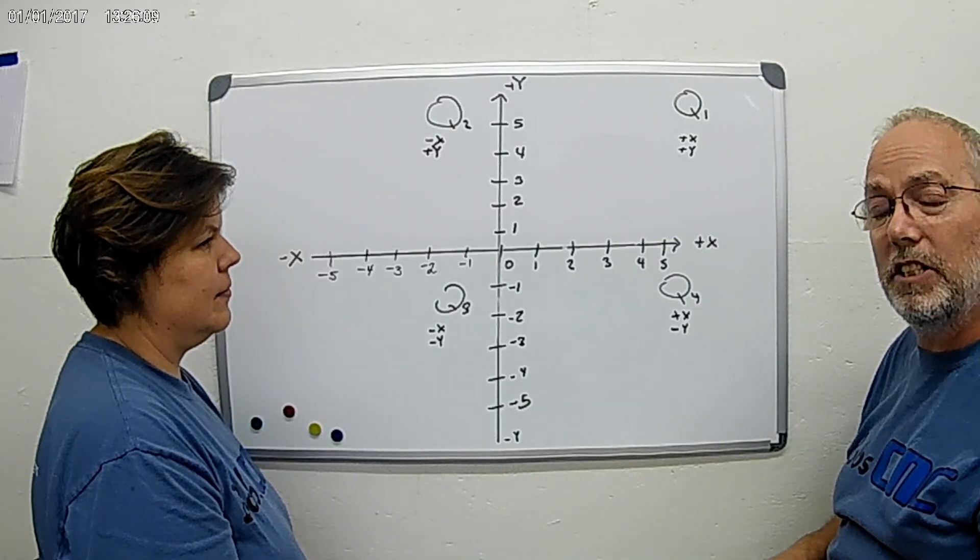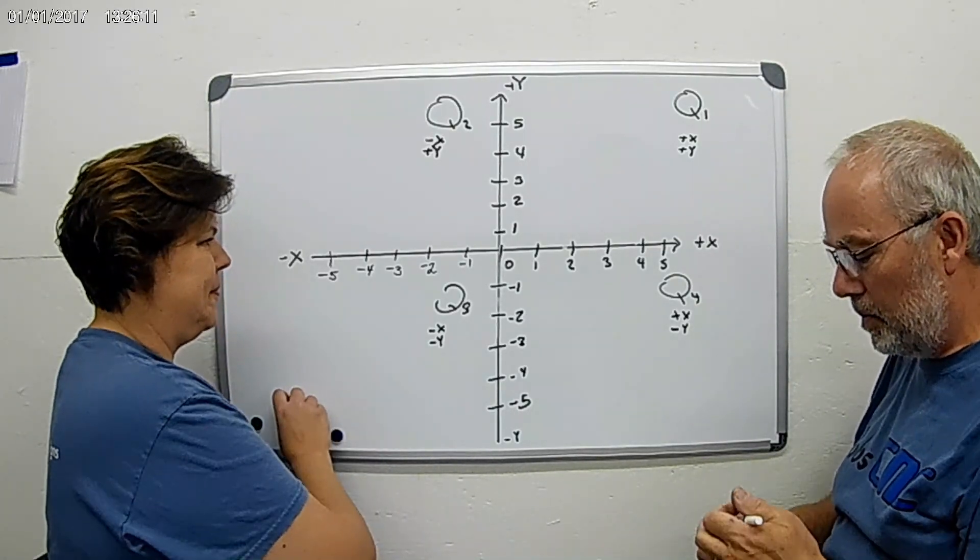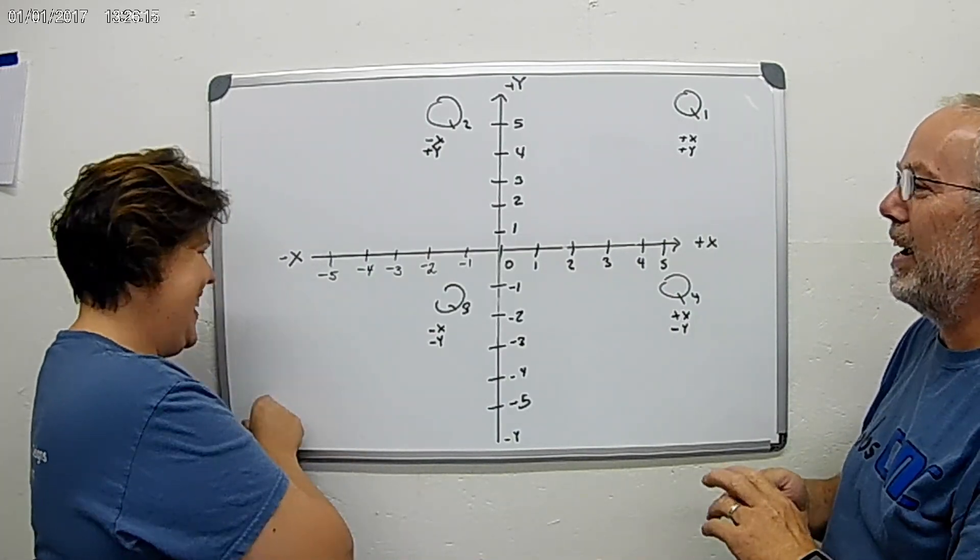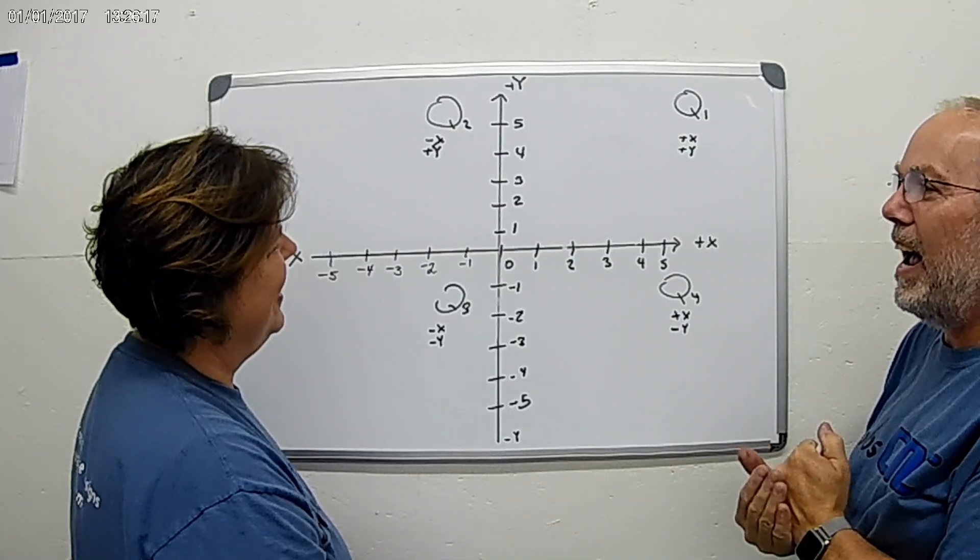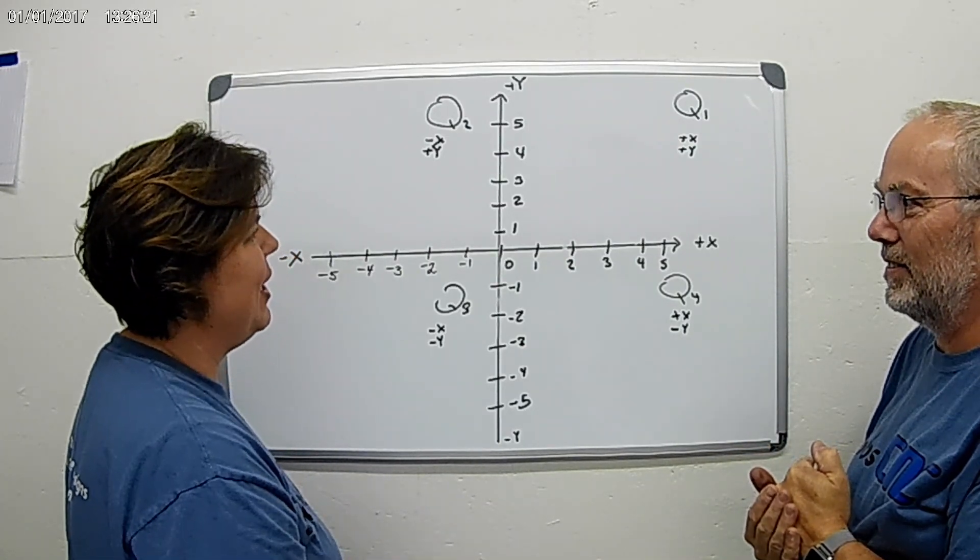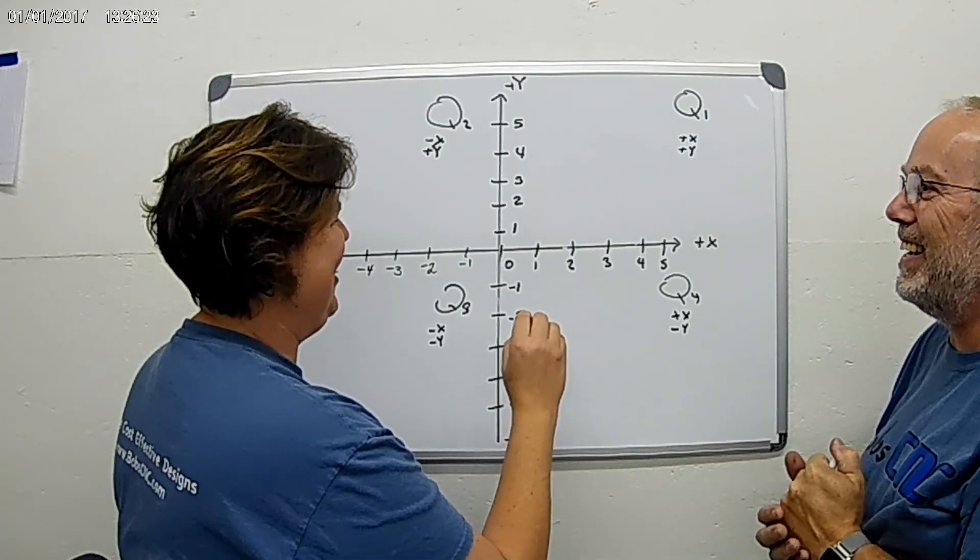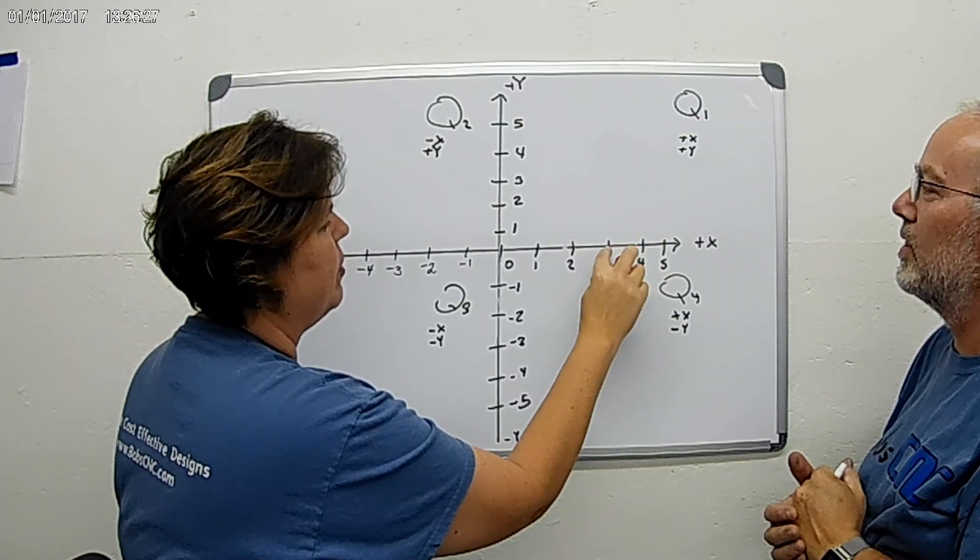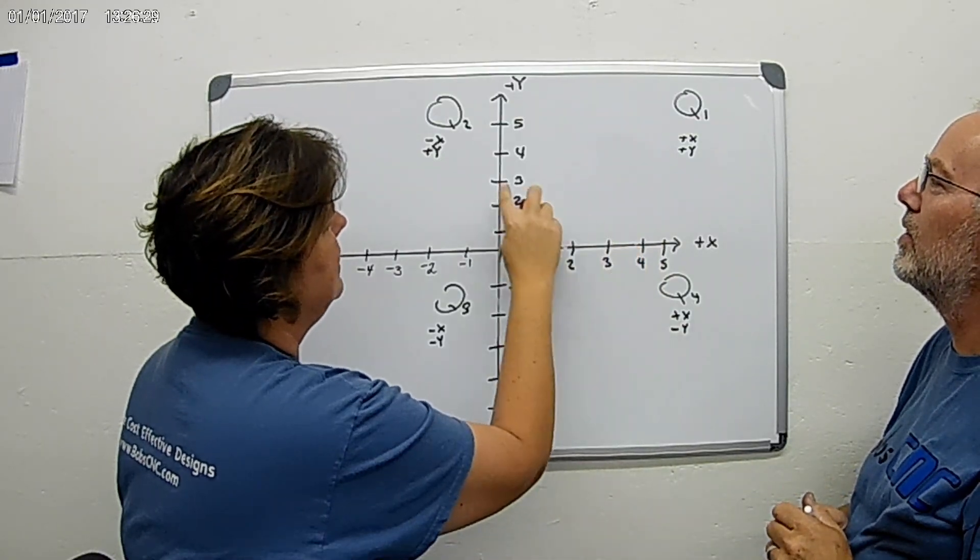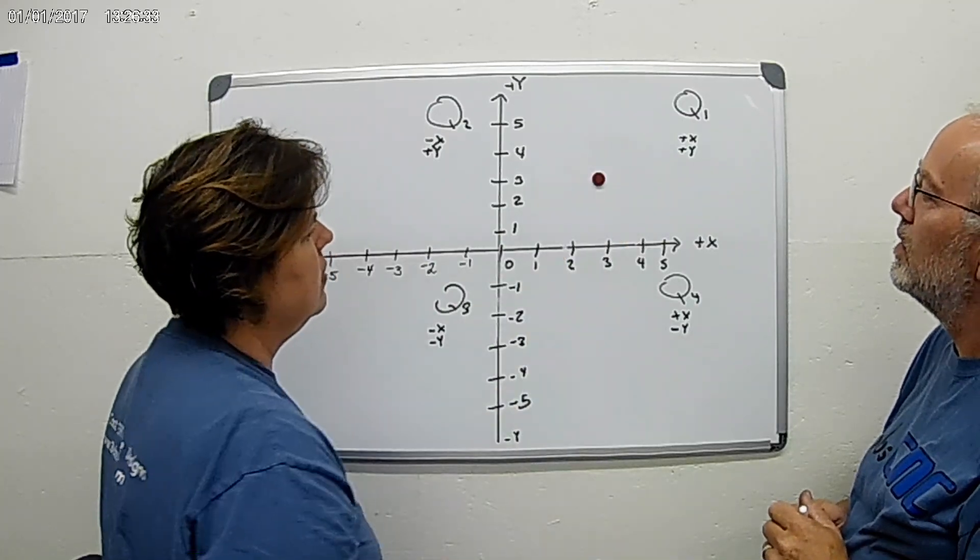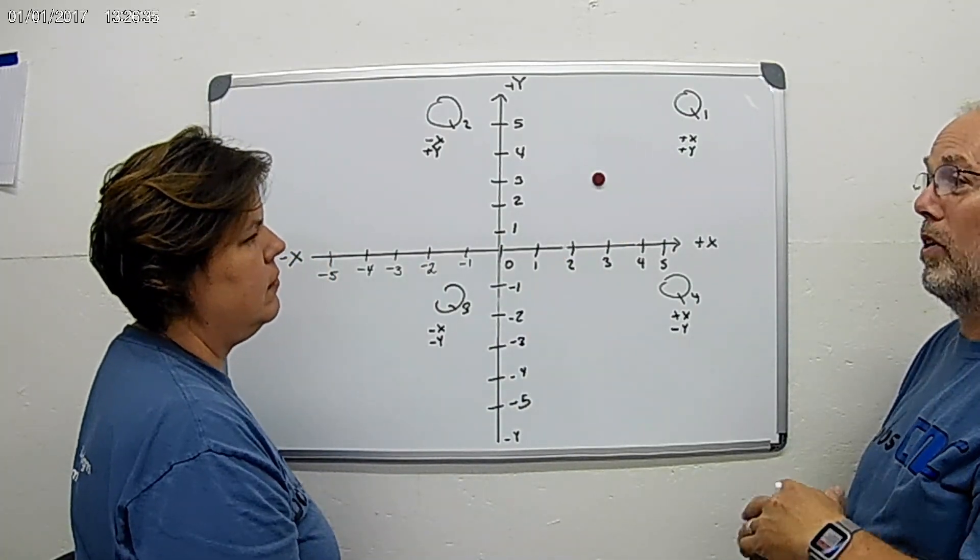And so we're going to go ahead and plot some points here in our XY coordinate system. Are you ready? No. She's ready, okay. Kristen, what if I said X3 Y3? X3 Y3? So you gave me an easy one. I did. So what I'm going to do is come over here to the number line and get my X3 first, and then I'm going to go up three places to the Y. So one, two, three.